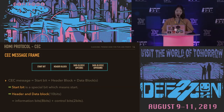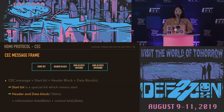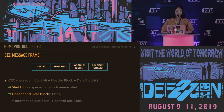The CEC message frame has the following structure. The first is the start bit, which is followed by the header block and the data blocks — it is a special bit indicating the start. The header block and data blocks are each composed of 10 bits: 8 bits of information bits and 2 bits of control bits. The data block is an optional block. Information bits and control bits are described in detail in the next slide.